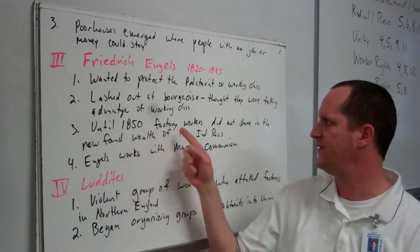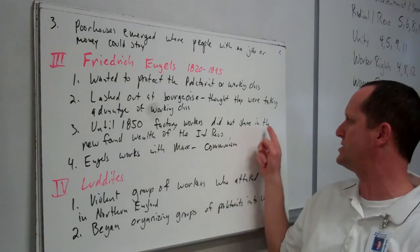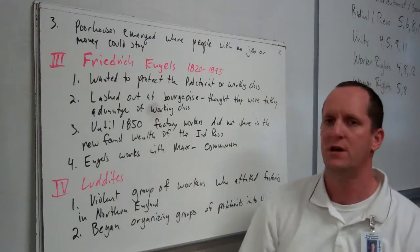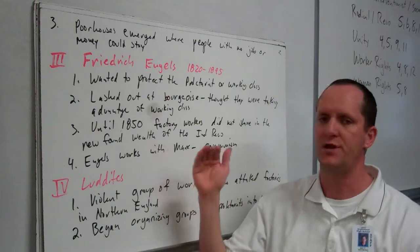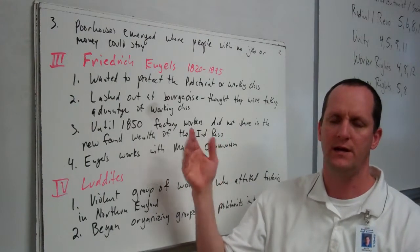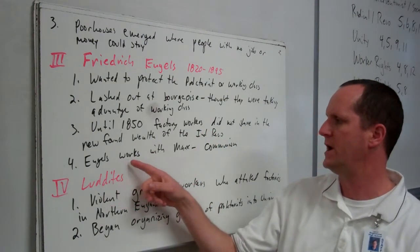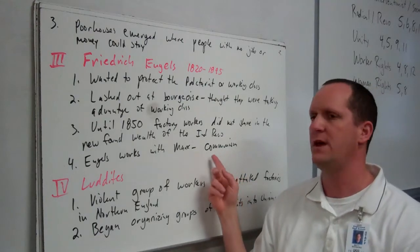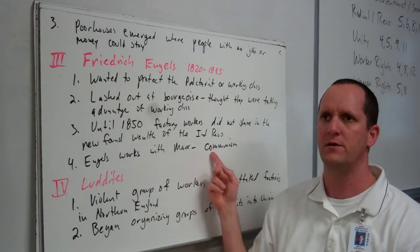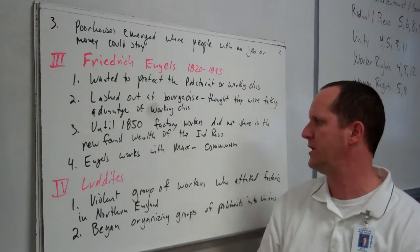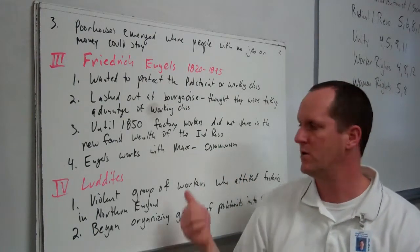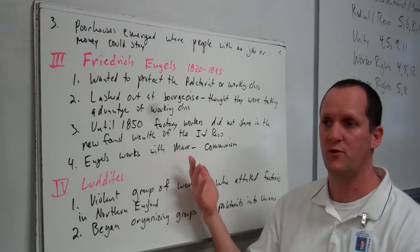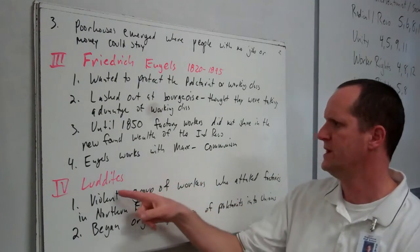Until 1850, factory workers did not share in the newfound wealth of the Industrial Revolution. After that point, improvement came in short increments. Engels worked with Karl Marx and they came up with the Communist Manifesto — communism — an extreme form of socialism.